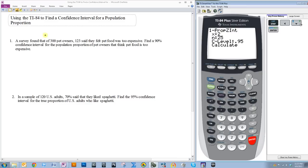So, N is always your sample size. And that's always going to be the easiest thing to find. 300 people were surveyed, so that's my N.